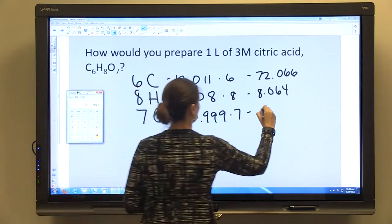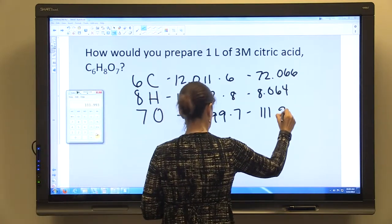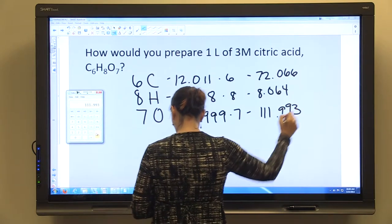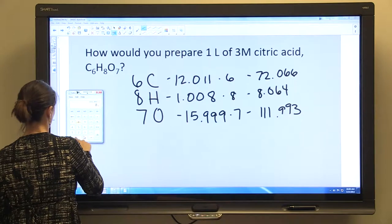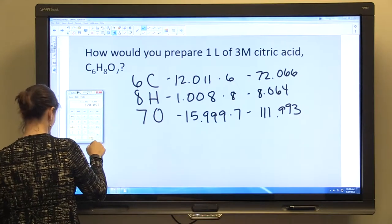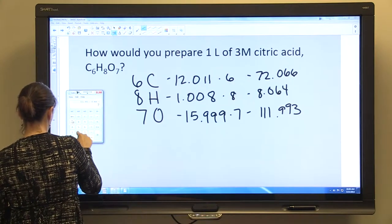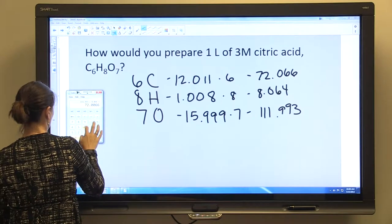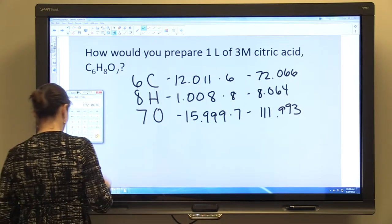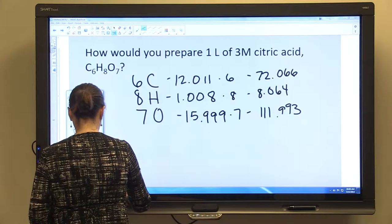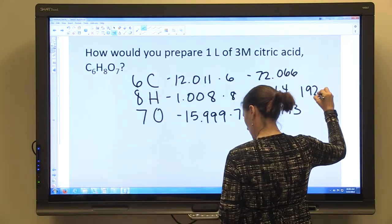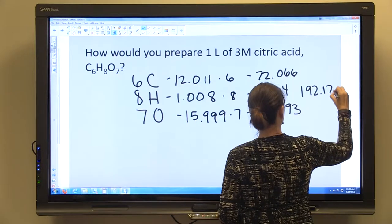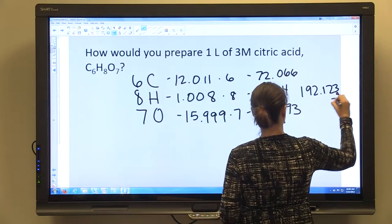15.999 times 7 is 111.993. And we're going to add those together.